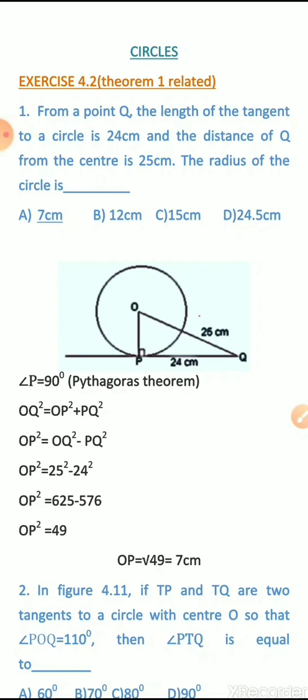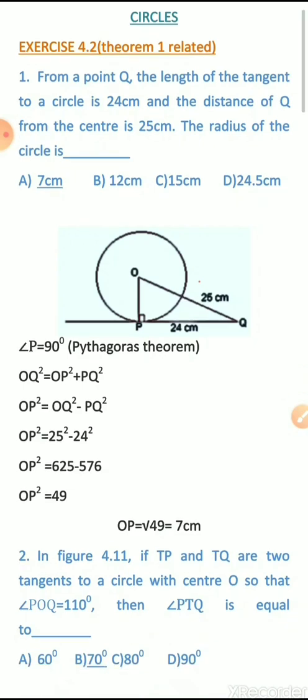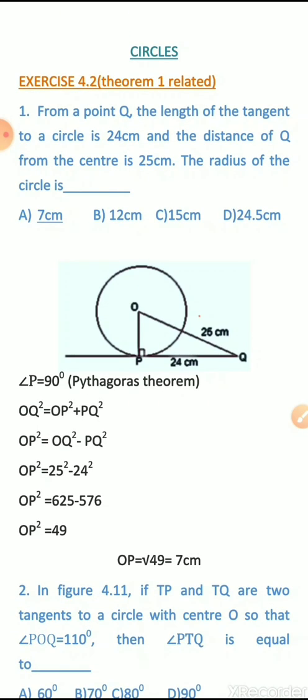Now we'll move on to the next exercise, 4.2, which is in your textbook on page 102. In this exercise we have 13 problems. I have divided these 13 problems into two parts: 7 plus 6. Today let us discuss 7 problems, and next class on Thursday we'll continue with the other 6. These 7 problems are related to Theorem 1.